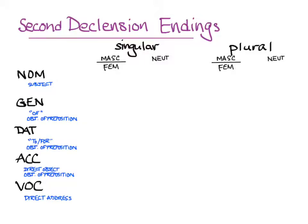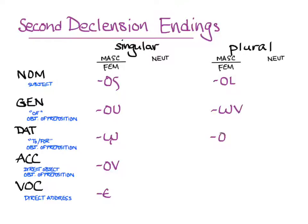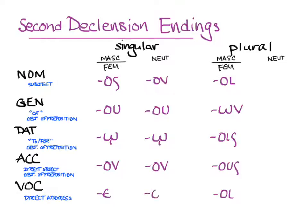We'll also need to be ready for masculine and feminine endings to be different from neuter endings. Here are the endings for the second declension nouns ending in -os, which are masculine and feminine. And now the endings for the second declension nouns ending in -on, which are neuter: -on, -ou, -ou, -on, -on, -a, -ōn, -ois, -a, -a.